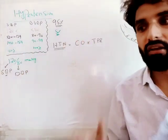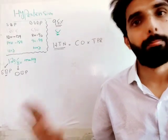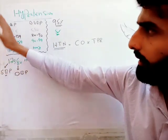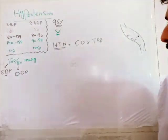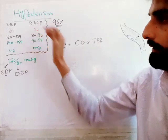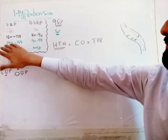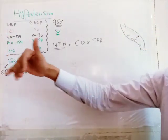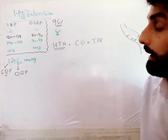In summary, systolic blood pressure is the pressure in the blood vessel at the time of heart contraction, and diastolic blood pressure is the pressure in the blood vessel at the time of heart relaxation. There are different stages of hypertension: normal is 120 over 80; pre-hypertension is when systolic is 120 to 139 or diastolic is 80 to 90; stage 1 hypertension is 140 to 159; and stage 2 hypertension is above 160.